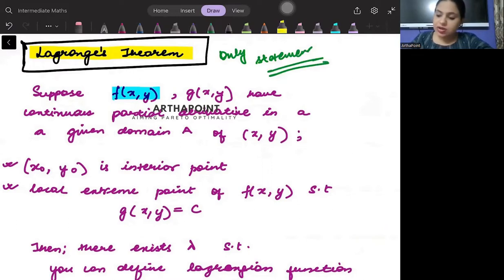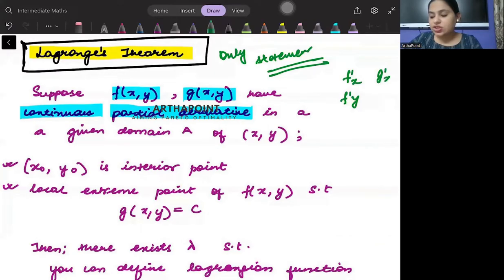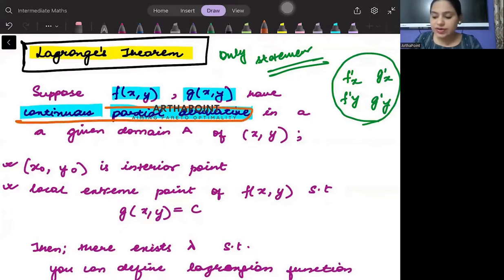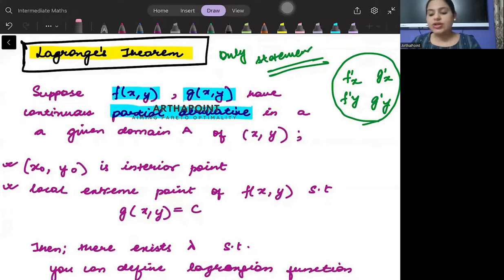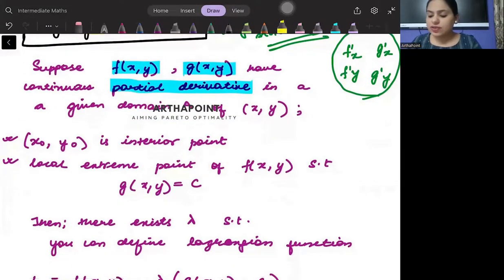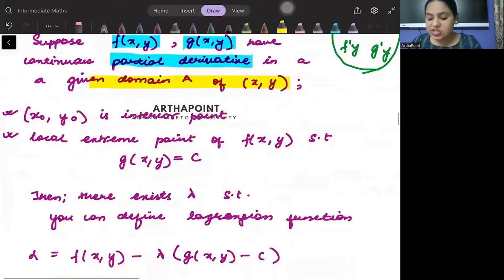Let's read. Suppose f(x,y), g(x,y) have continuous partial derivatives. So if you remember, I was able to find f'x, f'y, g'x, g'y. So they have a continuous partial derivative. I am able to differentiate them. In a given domain A of xy, (x0, y0) is an interior point.